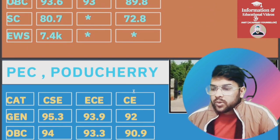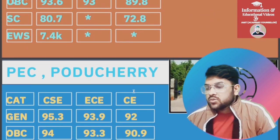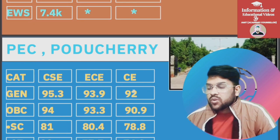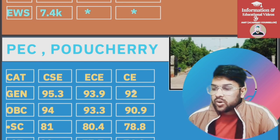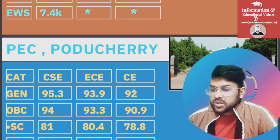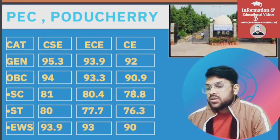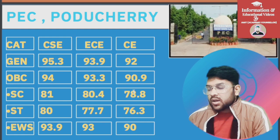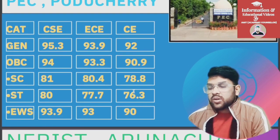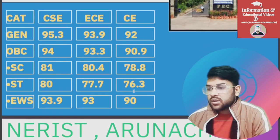For PEC, Food Technology branch: General 95.3, OBC 94, SC 81, ST 80, EWS 93.9 percentile.